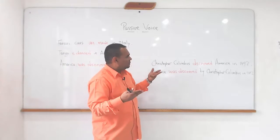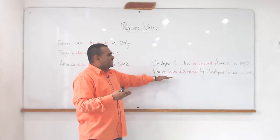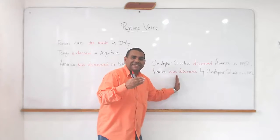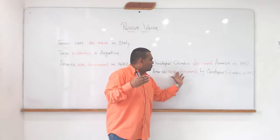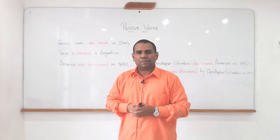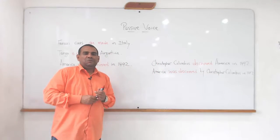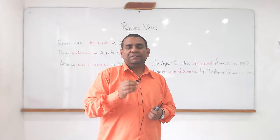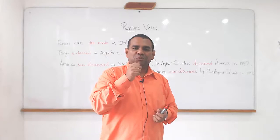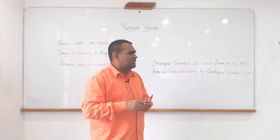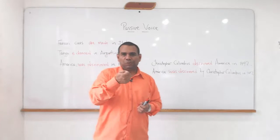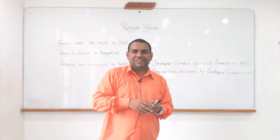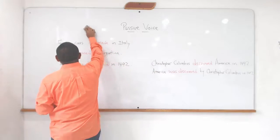To summarize: 'Ferrari cars are made in Italy.' 'Tango is danced in Argentina.' 'America was discovered in 1492.' 'Christopher Columbus discovered America in 1492' — we prefer an active sentence there. But it doesn't mean a passive sentence cannot be used: 'America was discovered by Christopher Columbus in 1492.' Now I'm going to continue with the last part of our explanation tonight, which will have to do with some special cases where not necessarily the direct object constitutes the subject in passive sentences.